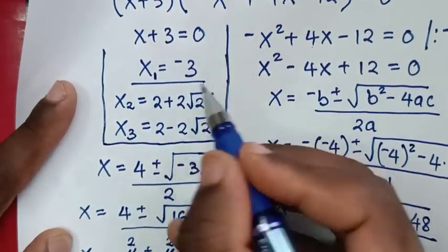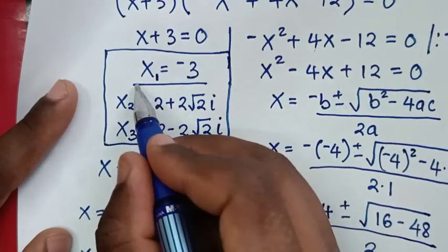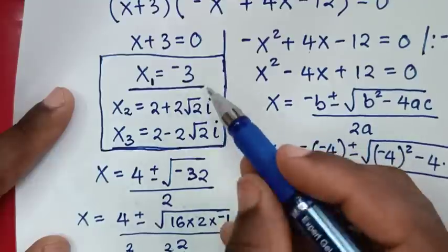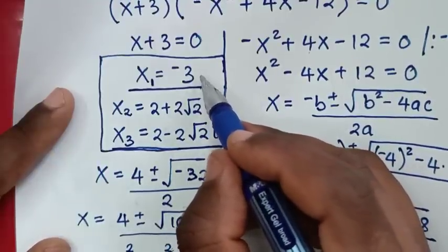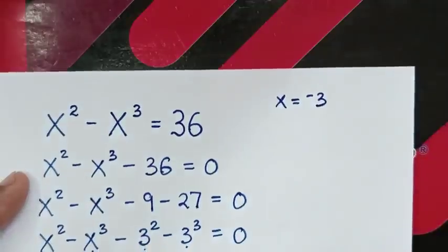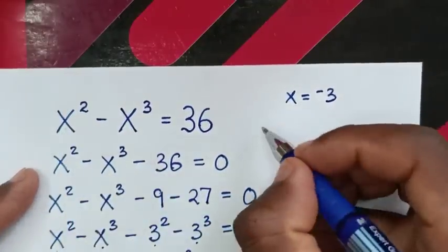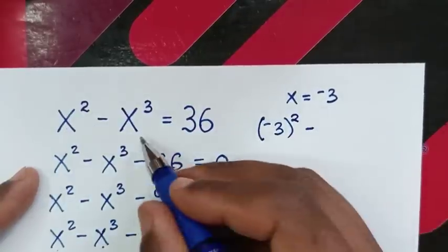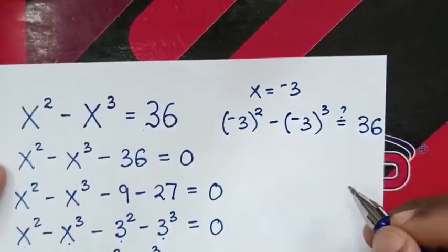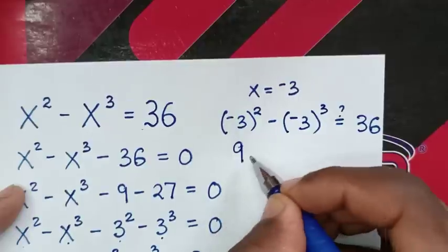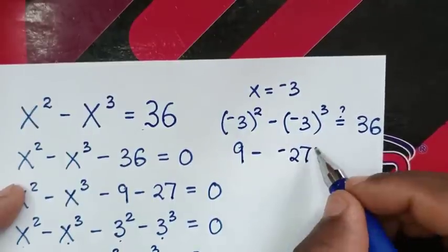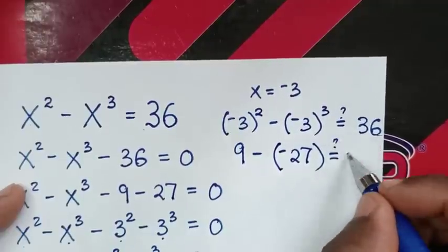These are all three values of x: one real solution and two complex solutions. To check if these values are correct we will verify for x equals negative 3. Substituting negative 3 into x squared minus x cubed: negative 3 squared is 9, and negative 3 cubed is negative 27.